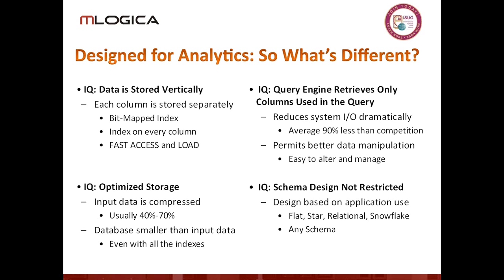IQ retrieves only the columns that are used by a query, which is a significant benefit. Most tables in data warehouse systems have tens, hundreds, or even thousands of columns. Reading only the one or two columns you're interested in rather than all hundred or a thousand columns reduces IO by a factor of 10x or 100x.